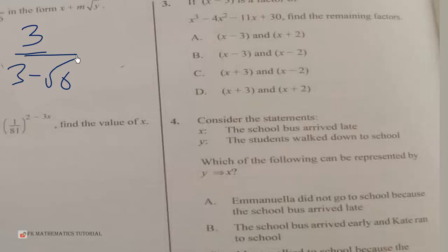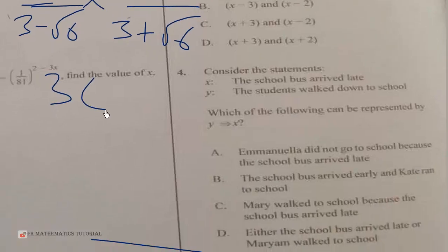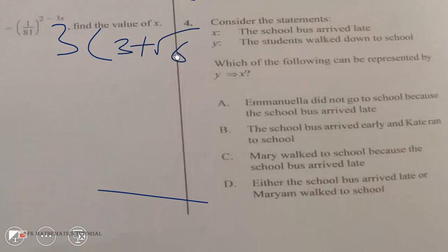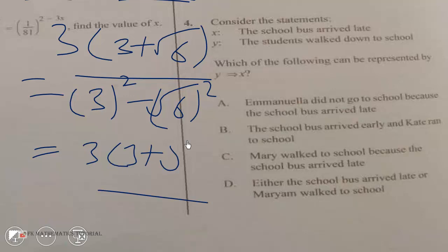We rationalize by multiplying by the conjugate of the denominator, which is (3 plus root 6) over (3 plus root 6) — multiply both the numerator and denominator. So we have 3 times (3 plus root 6) all over 3 squared minus root 6 all squared, which is a difference of two squares. That gives us 3 times (3 plus root 6) all over 9 minus 6, which is 3.